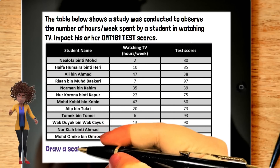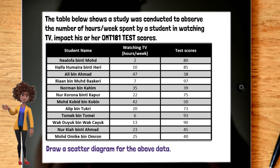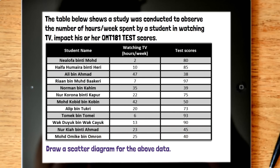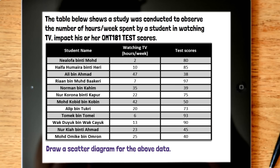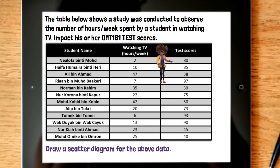The independent variable causes a change in the dependent variable. For example, time spent watching television causes a change in test scores, and it isn't possible that test scores could cause a change in time spent watching television. Therefore, time spent watching television must be the independent variable and test score must be the dependent variable, because the sentence doesn't make sense the other way around.